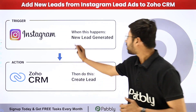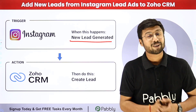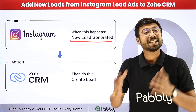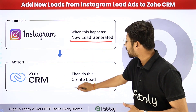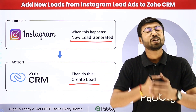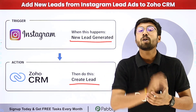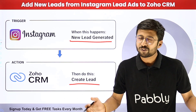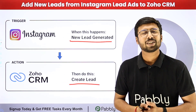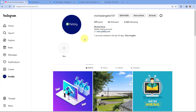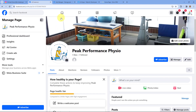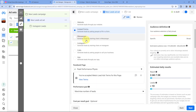In this automation, whenever a new lead is generated in Instagram Lead Ads, automatically the details of that lead will be sent to Zoho CRM and we are going to create a new lead there. As you can see, this is my Instagram account, which I have connected with my Facebook page, and using this Facebook page, I'm running ads on Instagram to generate new leads.